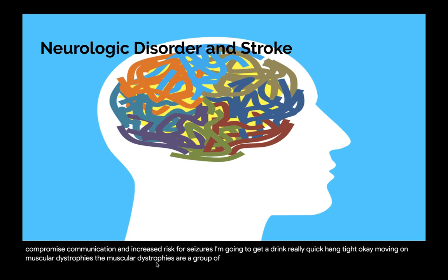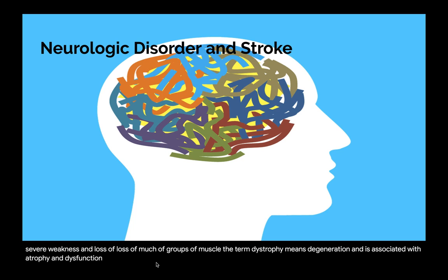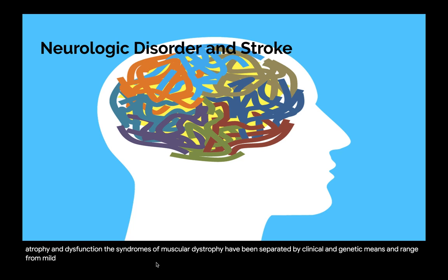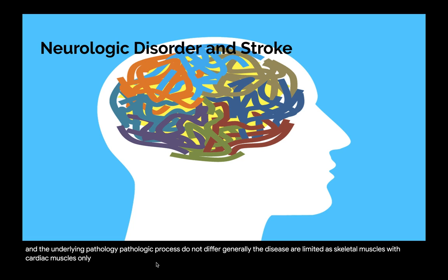The muscular dystrophies are a group of more than 30 genetic myopathies characterized by progressive severe weakness and loss of groups of muscle. The term dystrophy means degeneration and is associated with atrophy and dysfunction. The syndromes have been separated by clinical and genetic means, and range from mild Becker type with a later onset to more severe Duchenne type. All types are genetically inherited, and the underlying pathologic process does not differ. In the United States, more than 50,000 children and adults are affected with some form of muscular dystrophy.